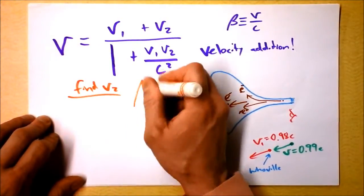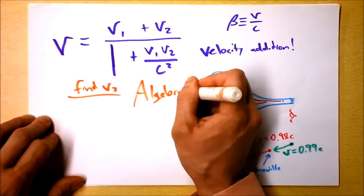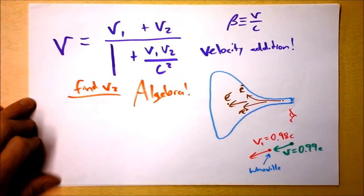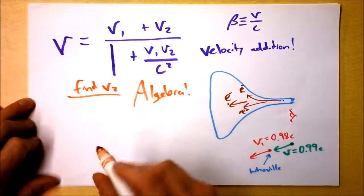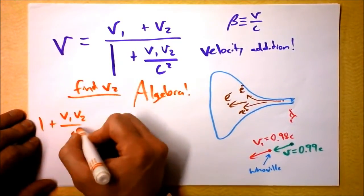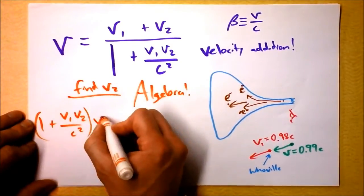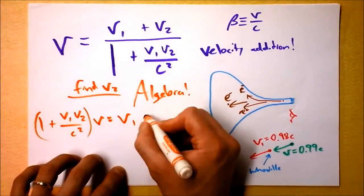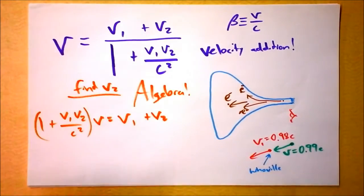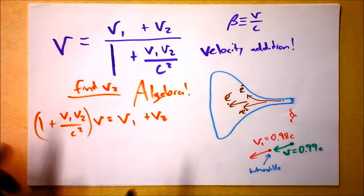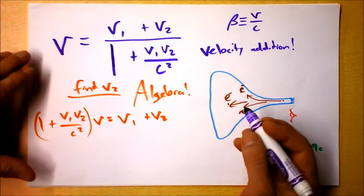Which brings us to algebra — your favorite part of the show. Let's solve for V2. I get: 1 plus V1·V2 over C squared, times V. I'm going to try to get everything with V2 on one side and everything with V1 on the other side, distributing and moving things from side to side.